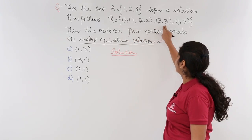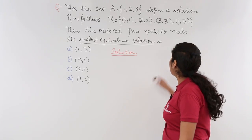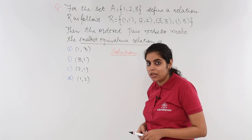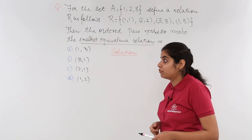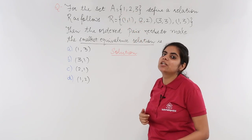These are the 4 ordered pairs given to me: (1,1), (2,2), (3,3), and (1,3). The set had already 3 elements only. Now, check whether it is reflexive or not. For reflexive, all these 3 elements have to be related to themselves.